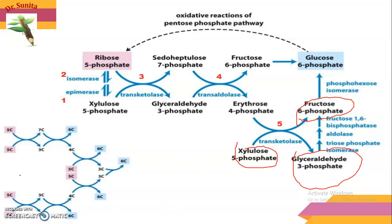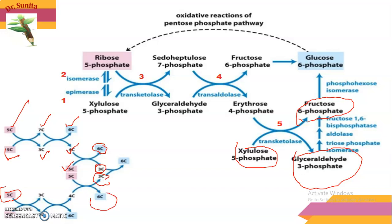This is the total summarization of the reactions. The 5-carbon compounds — xylulose-5-phosphate, ribose-5-phosphate — are formed in the first step, and xylulose-5-phosphate is formed as well. These are then converted into the 7-carbon compound sedoheptulose-7-phosphate and the 3-carbon compound glyceraldehyde-3-phosphate. Rearrangement via transaldolation forms the 6-carbon fructose-6-phosphate and 4-carbon erythrose-4-phosphate. Then xylulose-5-phosphate reacts to form fructose-6-phosphate and glyceraldehyde-3-phosphate, which can enter glycolysis or regenerate glucose-6-phosphate.